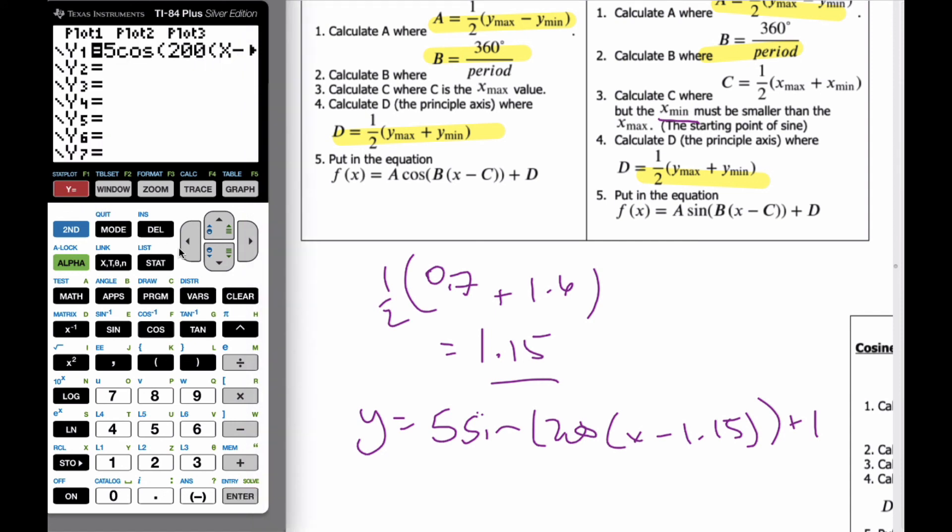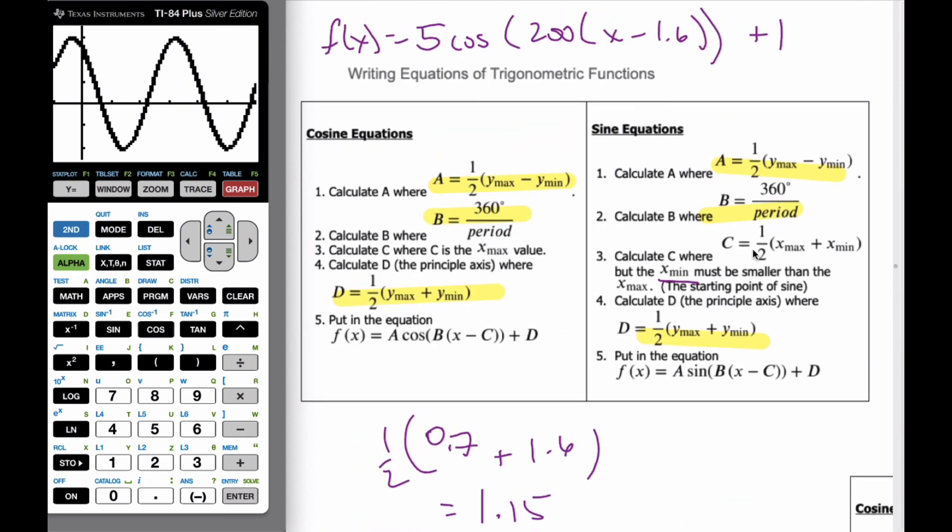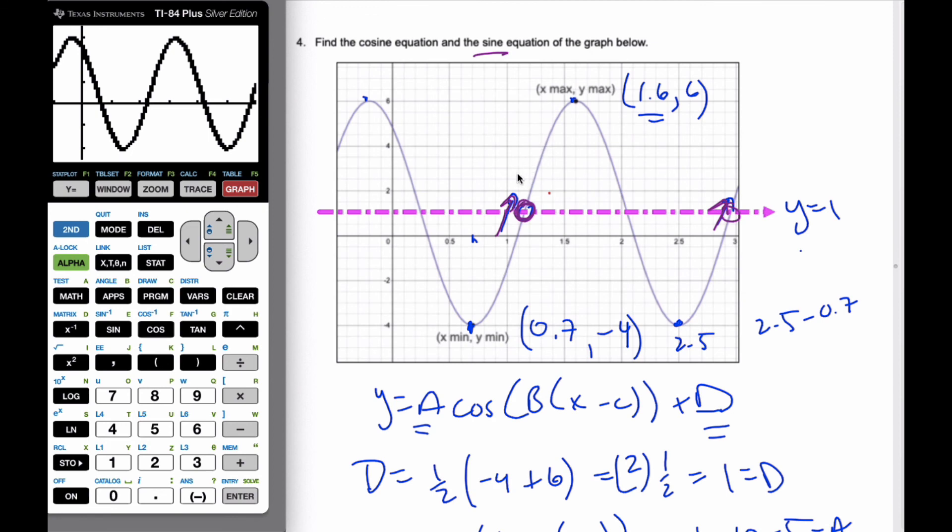All right, and if I go to my calculator, if I want to check it, I'm going to turn, and I'll keep this on, I'm going to go here, I'll make it bold. And let's go 5 sine 200 x minus 1.15 plus 1.0, and it should go right on top of the cosine graph. And you can see by the bold, it actually does. And so calculating the sine or cosine are very similar, you just have to be careful of the C values, and that is how we make our equation.